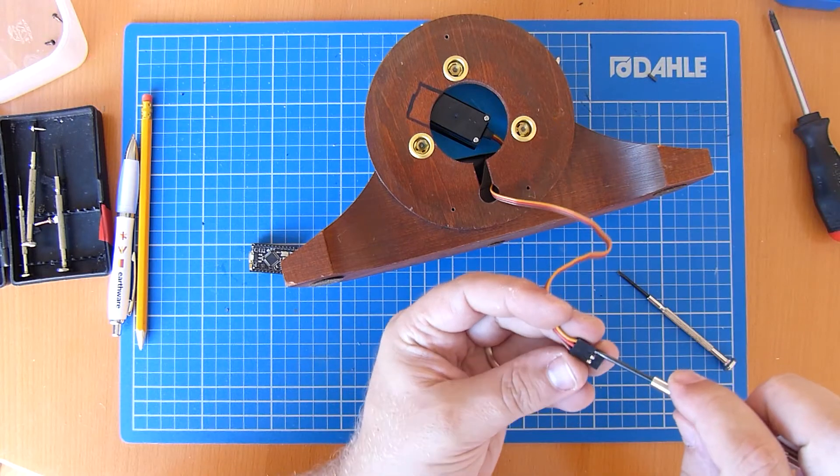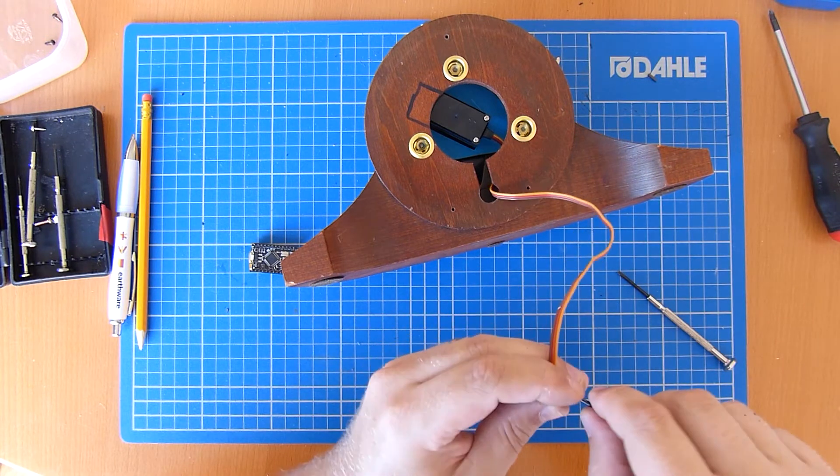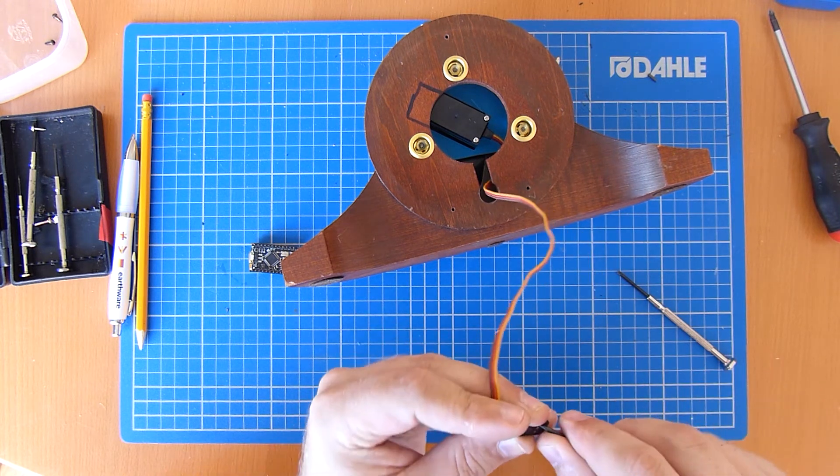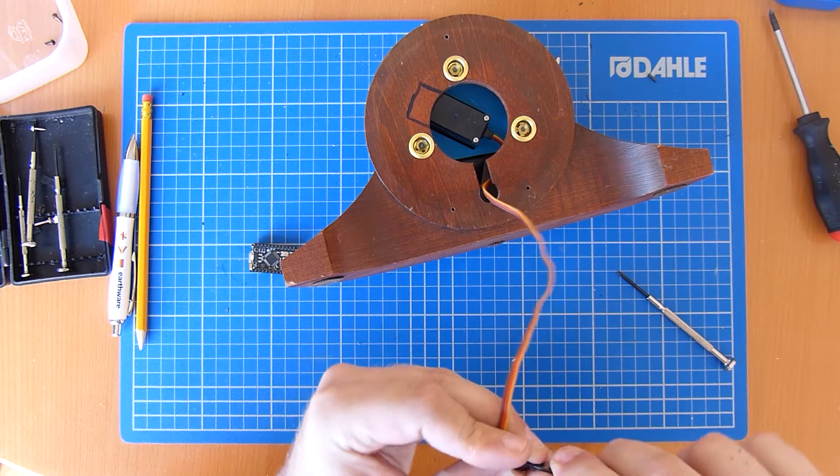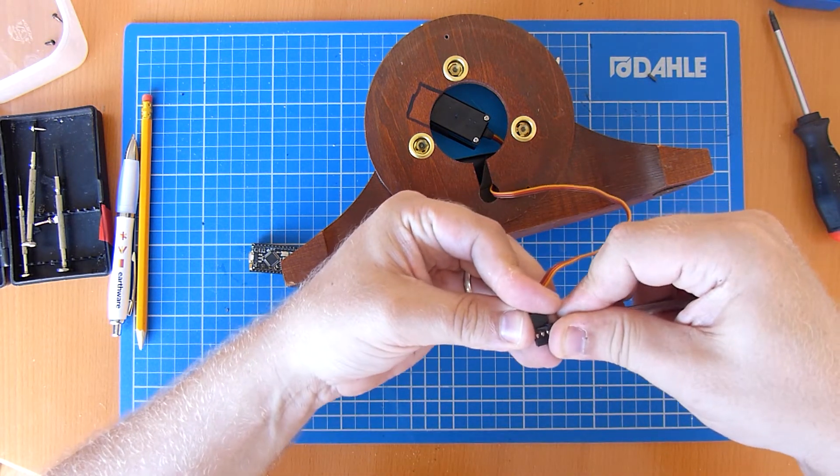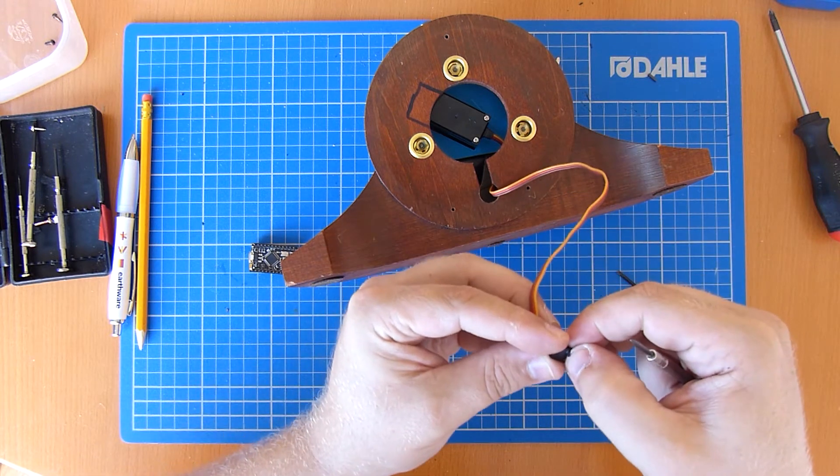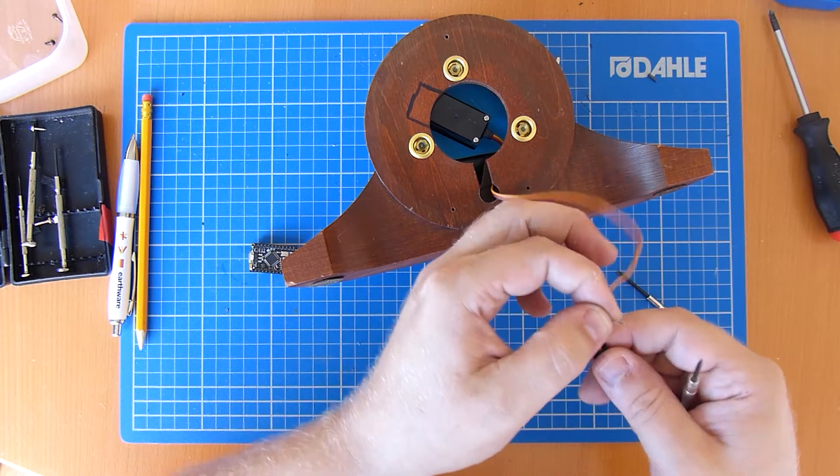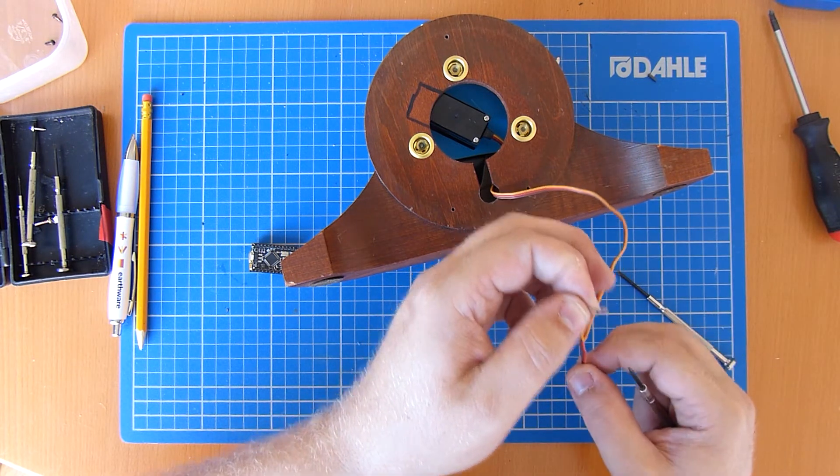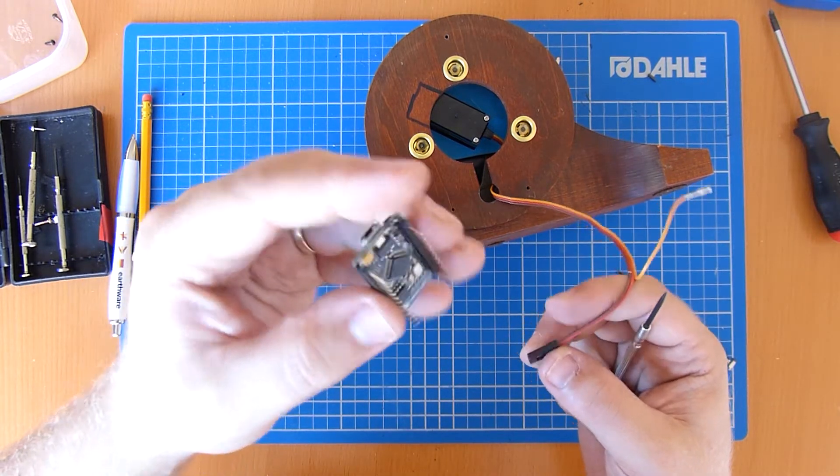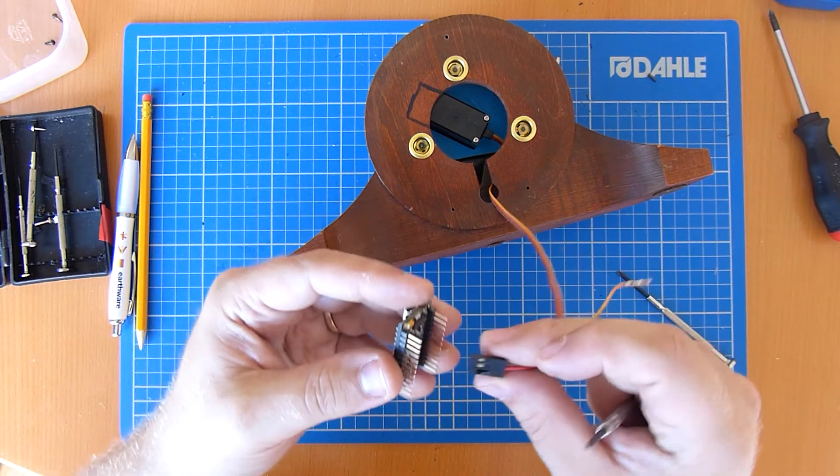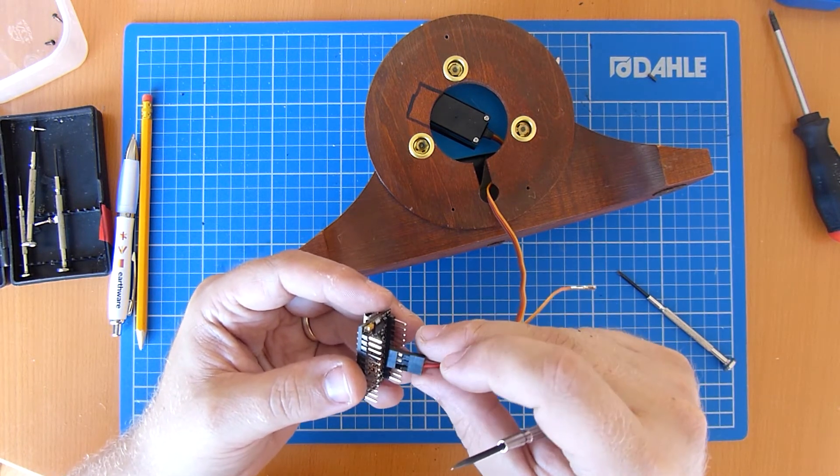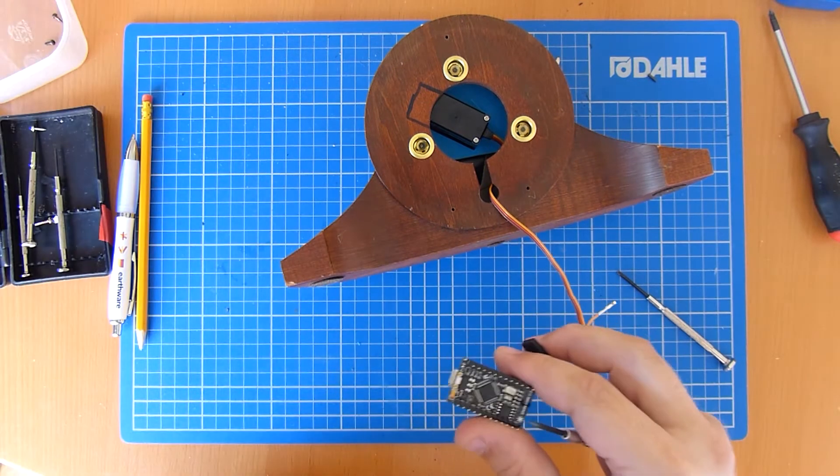So the next step was taking the microprocessor. This is the Particle Spark Core that we used in the previous programming video. And what we need to do is to take the original servo connector, where it's got three pins all together, and we wanted to separate those because the ground and the power needs to go to one section of the Spark Core, and then the signal lead needs to go to the other side. So we just broke off the little plastic tab on these leads, it's really easy to do, and pulled out individually the signal lead, which is the one we need separate, pulled the wire back a little bit.